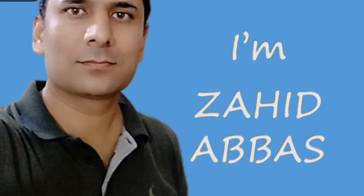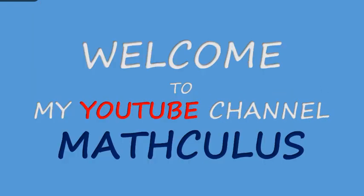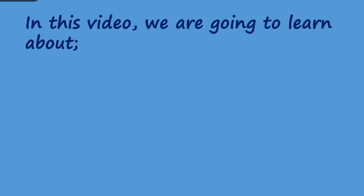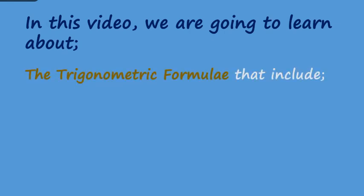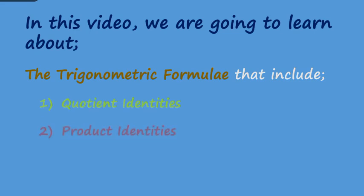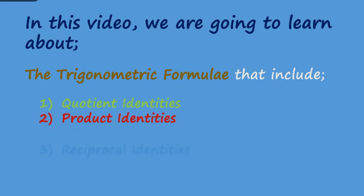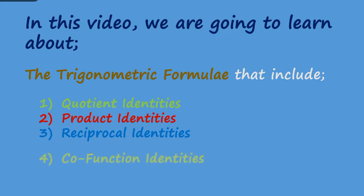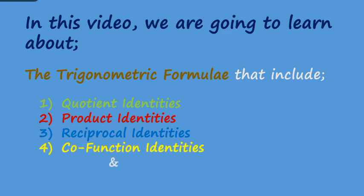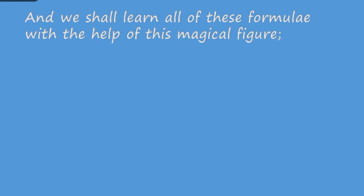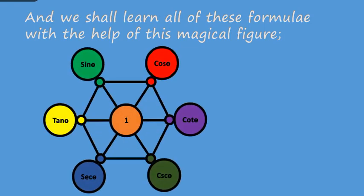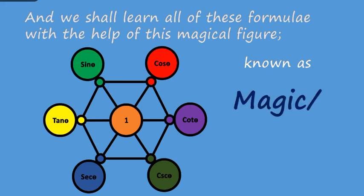Hello everyone. I am Zahid Abbas. Welcome to my YouTube channel Mathculus. In this video we are going to learn about the trigonometric formulae that include quotient identities, product identities, reciprocal identities, co-function identities, and Pythagorean identities. We shall learn all of these formulae with the help of this magical figure known as the magic or super hexagon.